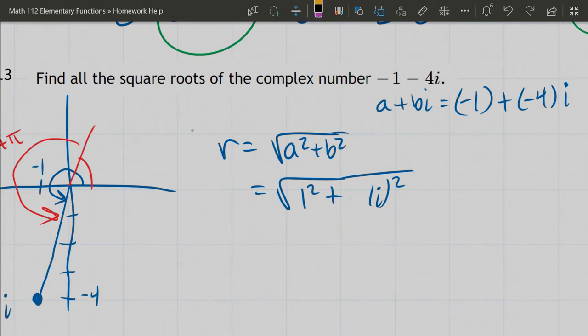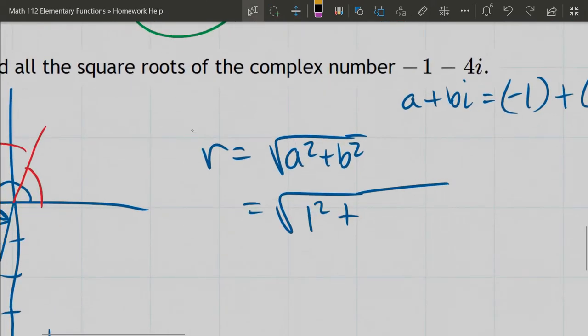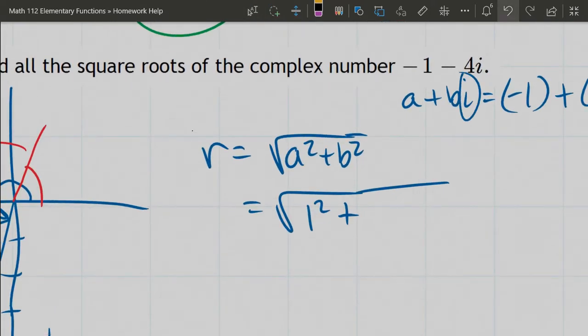You're supposed to grab the number b, not the i right next to it. So do not take that; you just want that -4. And of course, what's (-4)² is the same thing as positive 4². So 1 + 16 is 17.